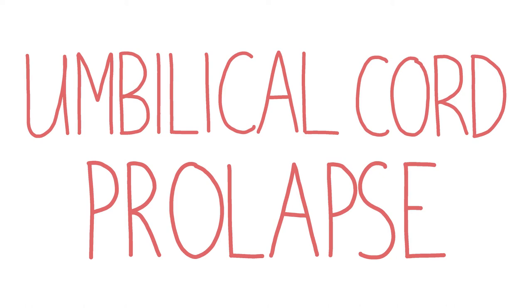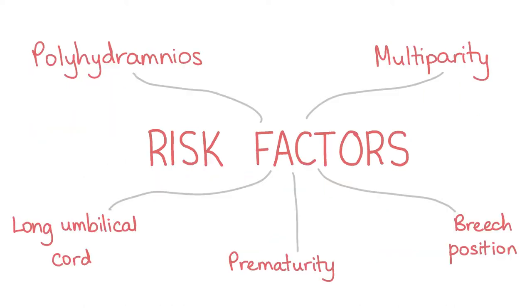On examination the cord may be palpated vaginally or may even be visible. The fetal heart rate may be abnormal on CTG. Risk factors for cord prolapse include polyhydramnios, multiparity, breech position, prematurity, and a long umbilical cord.